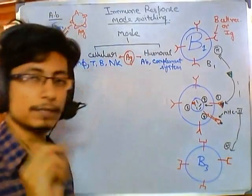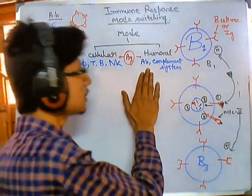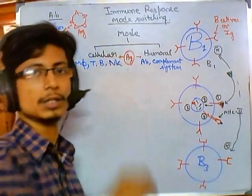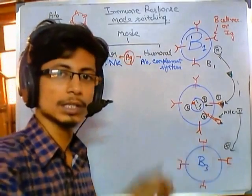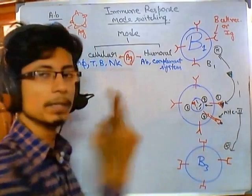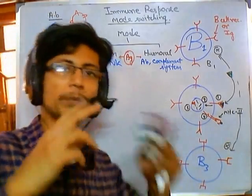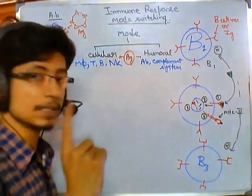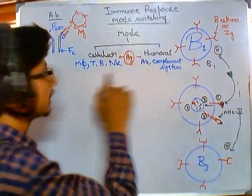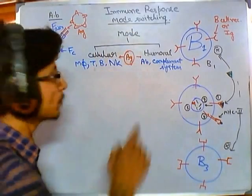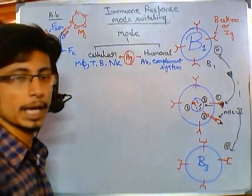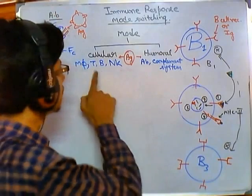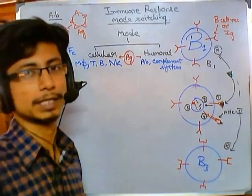For cellular mode, specificity is lower, but the chances of harming its own cells are greater. Humoral mode is more specific, reducing the risk of self-harm. You cannot rely on cellular mode throughout the entire infection. Critically, if the immune system takes the cellular mode, it shuts down the humoral mode for that time — and if it takes humoral, it shuts down cellular mode. This is very important.